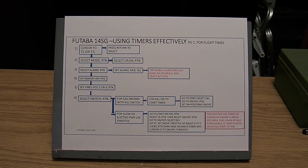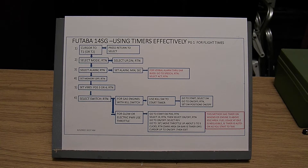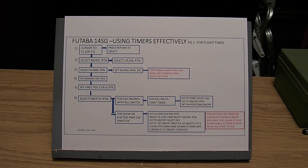The 14SG gives you two separate timers and each one is saved with each particular model. One of them records flight times and gives you alarms when you've reached a preset number of minutes and seconds on the transmitter. This type records up to 59 minutes — you can set it for anything up to 59 minutes and 59 seconds. The second is a cumulative timer and it does not reset when you turn your transmitter off.